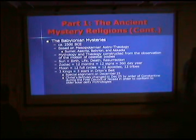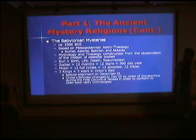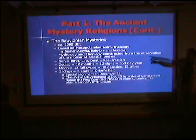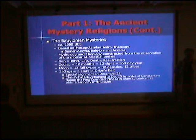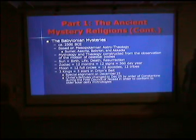Let's take a closer look at the Babylonian mysteries. We have information suggesting they started around 2500 BCE. All of the mystery religions from Babylon were based on the Mesopotamian astral theology. Mesopotamia comprised the four kingdoms of Sumer, Assyria, Babylon, and Akkadia — which are the modern Middle Eastern countries we know as Iraq, Iran, and Syria. So this was all taking place right over there in Baghdad and Damascus, 2500 BCE.